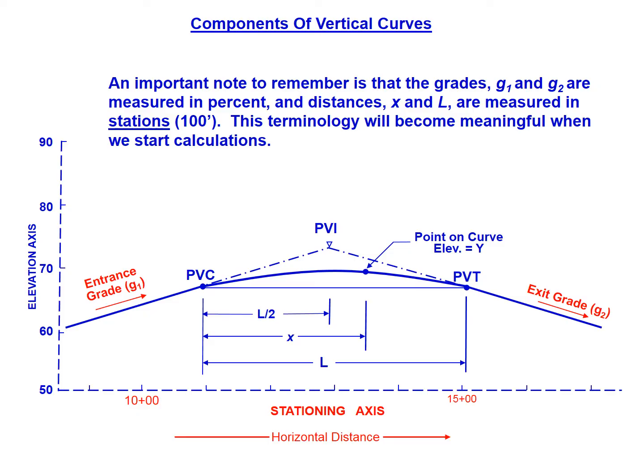The distances, so X and L primarily, these are all measured in stations where one station equals 100 feet. So if the entire length of the curve L is 900 feet, for the equations that ask for L, you should put in 9 stations, just the number 9, not 900 feet.